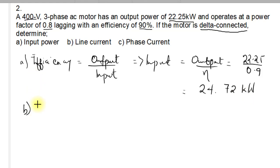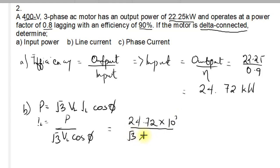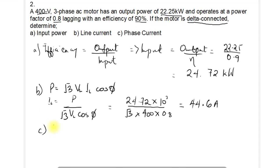To find the line current, we use the formula P = √3 × VL × IL × cosφ. Making IL the subject and substituting, IL = 24.72 × 10³ divided by (√3 × 400 × 0.8), giving us 44.6 amperes. Since the motor is delta connected, IL = √3 × IP, so the phase current IP = 44.6 / √3 = 25.75 amperes.